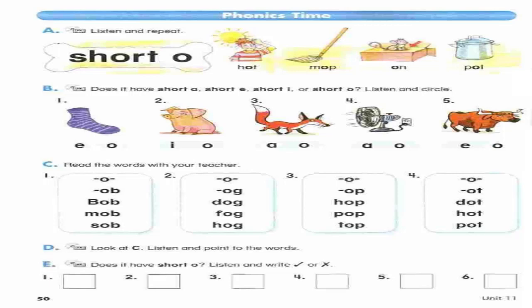E. Does it have short O? Listen and write check or X. Number 1: ten. Number 2: pot. Number 3: hit. Number 4: cat. Number 5: hop. Number 6: pod.